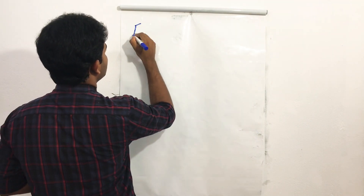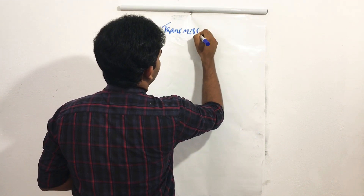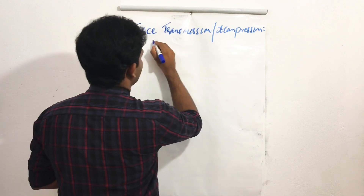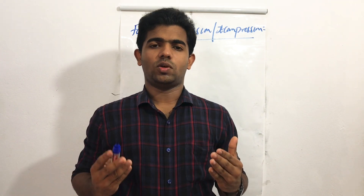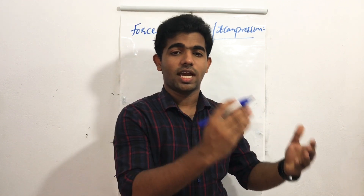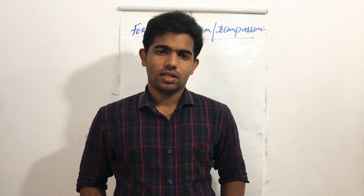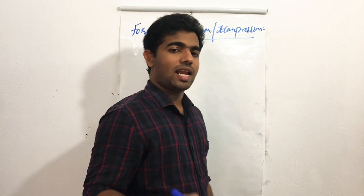Let us examine force transmission or joint compression at the hip joint. When a person is standing, the best way to imagine this is to stand in front of a mirror in bilateral stance. You can feel that none of the muscles in and around the hip joint are active during this period, and we have studied earlier that muscles are inactive in this position.